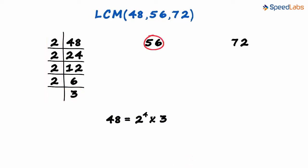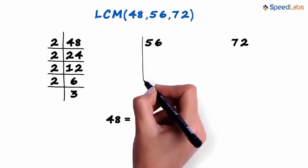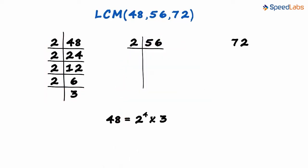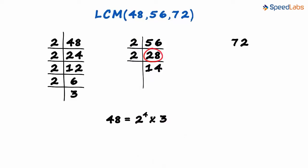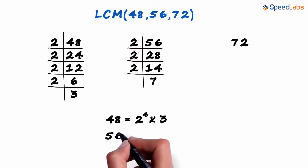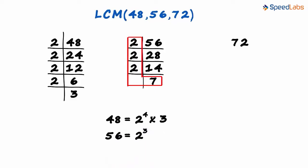What about 56? Yes, it is also divisible by 2 and 2 times 28 is 56, 2 times 14 is 28 and 2 times 7 is 14. We stop the process here since 7 is a prime number. We have 3 2's and a 7. So 56 can be written as 2 cubed multiplied by 7.